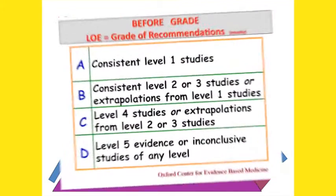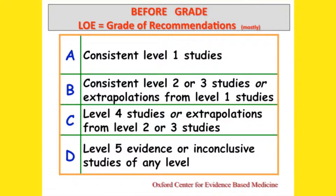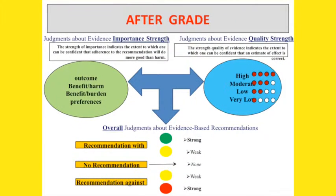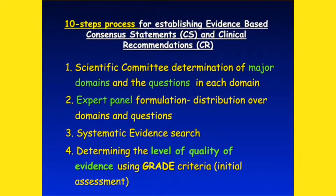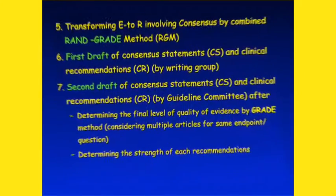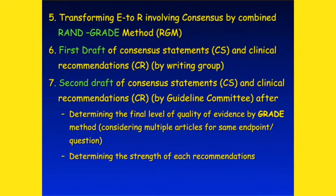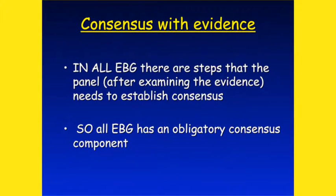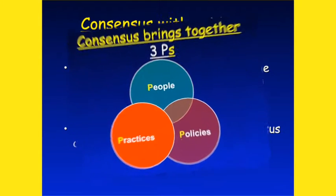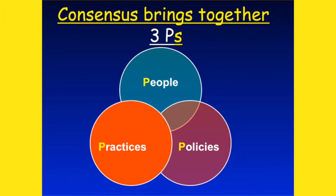You have to judge both the quality of evidence and the importance of that evidence, and balancing between those you arrive at an overall recommendation. But the judgment has to be made by the panel, and the panel are human beings who differ. That's why you have to have consensus within evidence-based guidelines — there is always a mandatory component of consensus. The 10 steps for developing an evidence-based clinical recommendation and consensus statement include areas where panel judgment is crucial and consensus is needed. Consensus brings the three Ps together: practice, people, and policies.